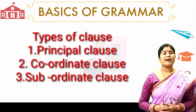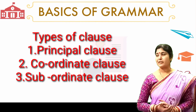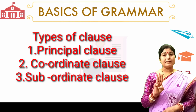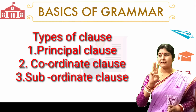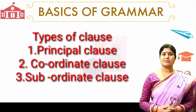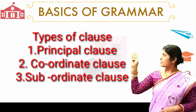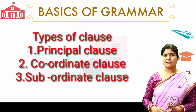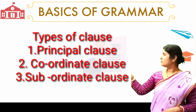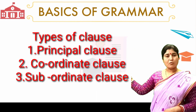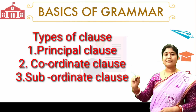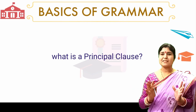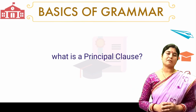So how many kinds of Clauses are there? There are three types of Clauses. Number one is the Principal Clause. Number two is the Co-ordinate Clause. And number three is the Subordinate Clause.